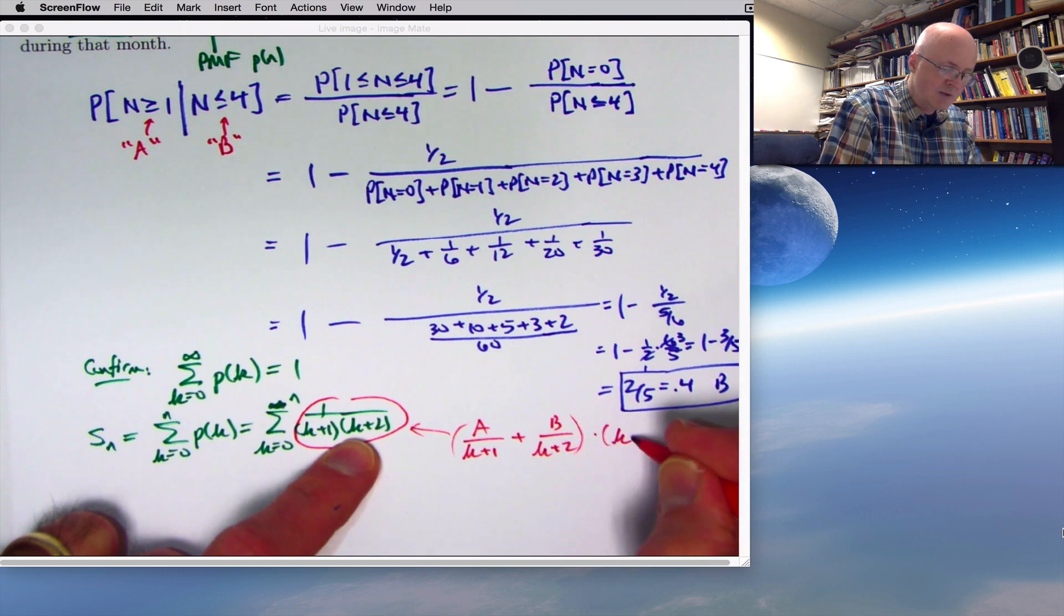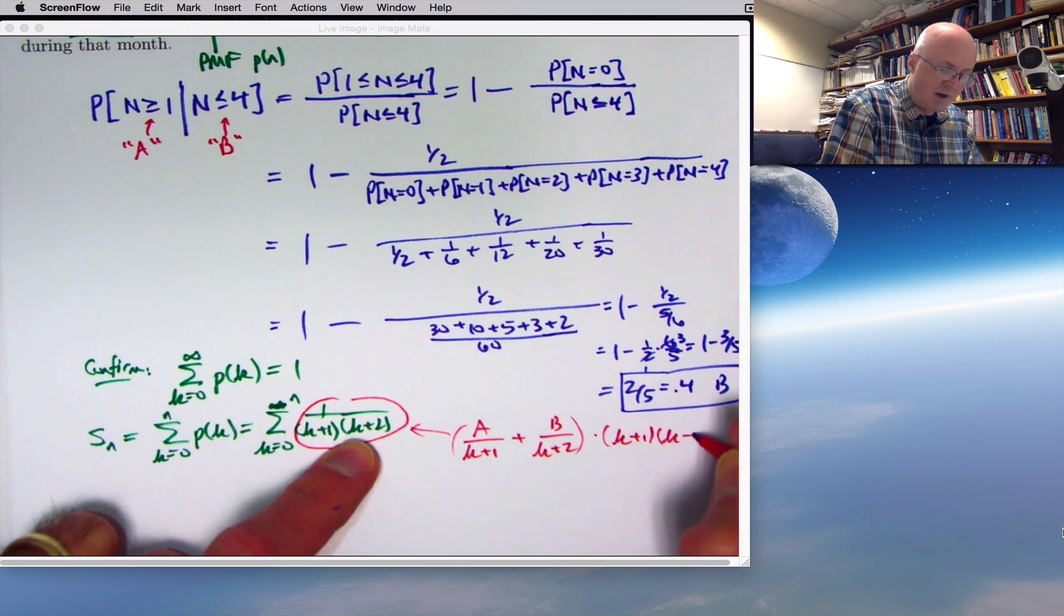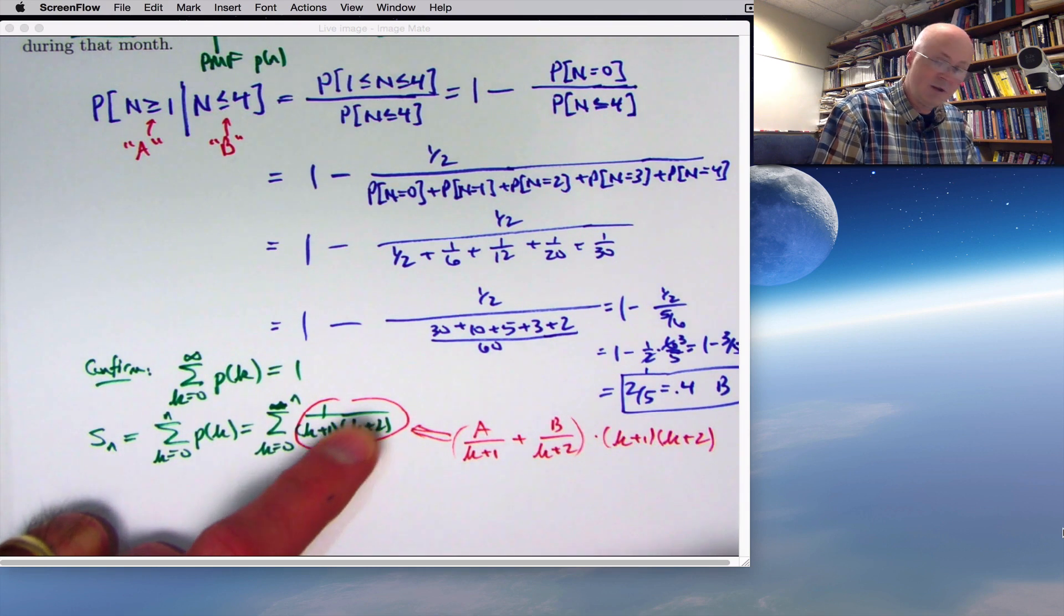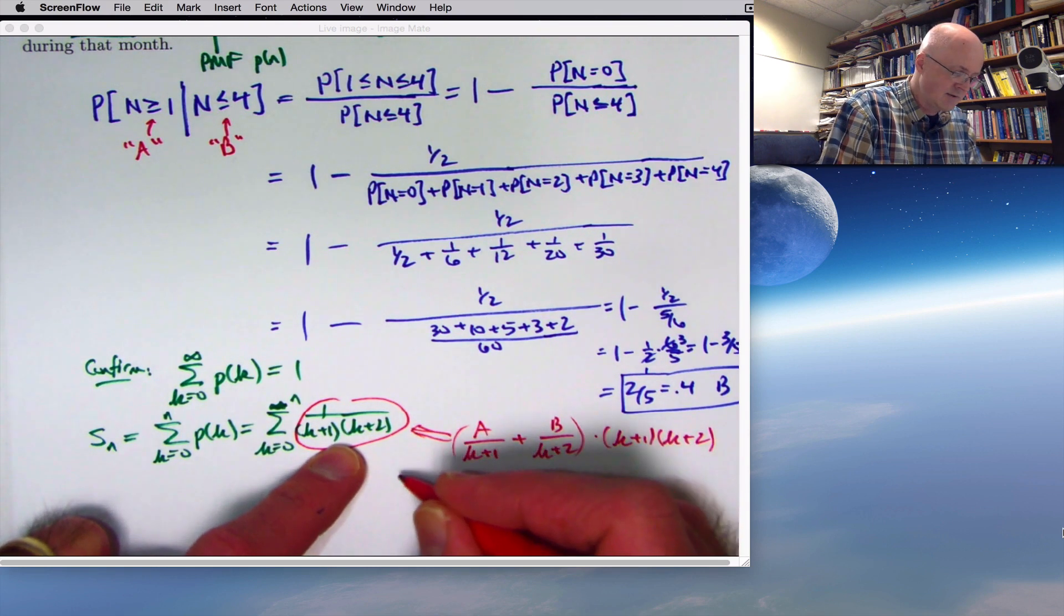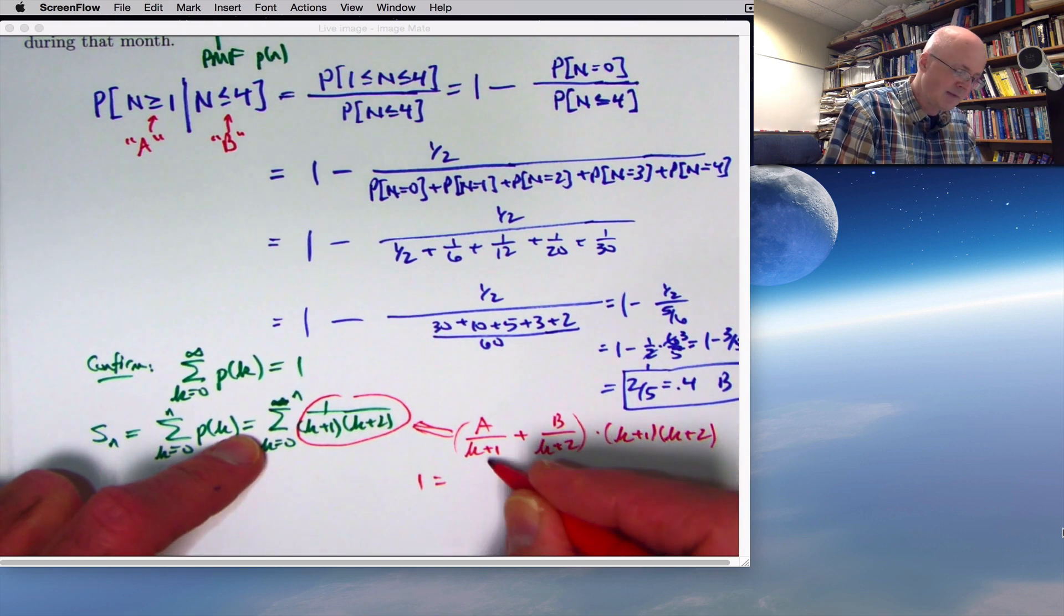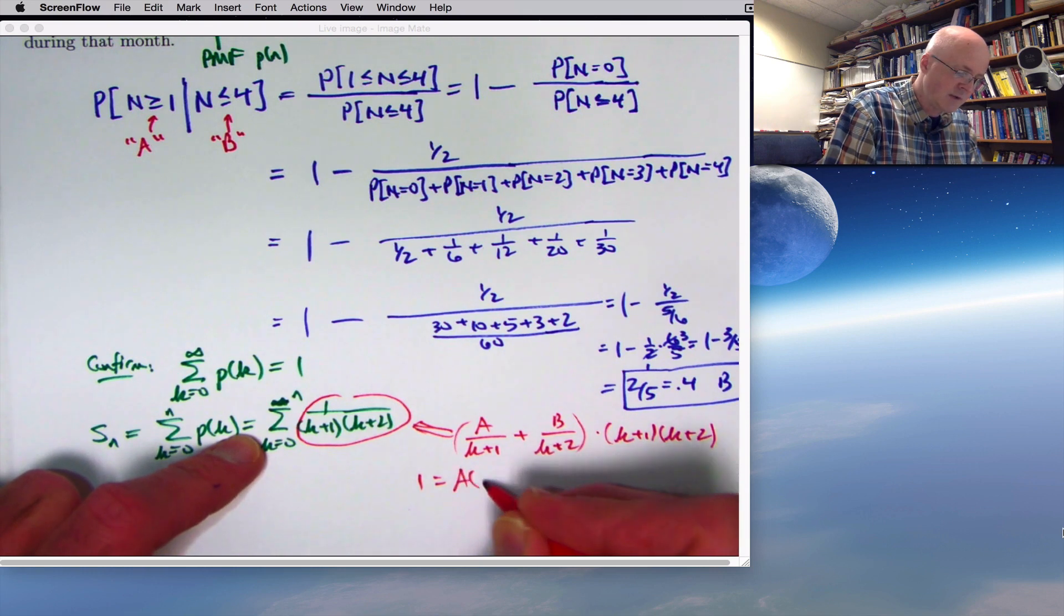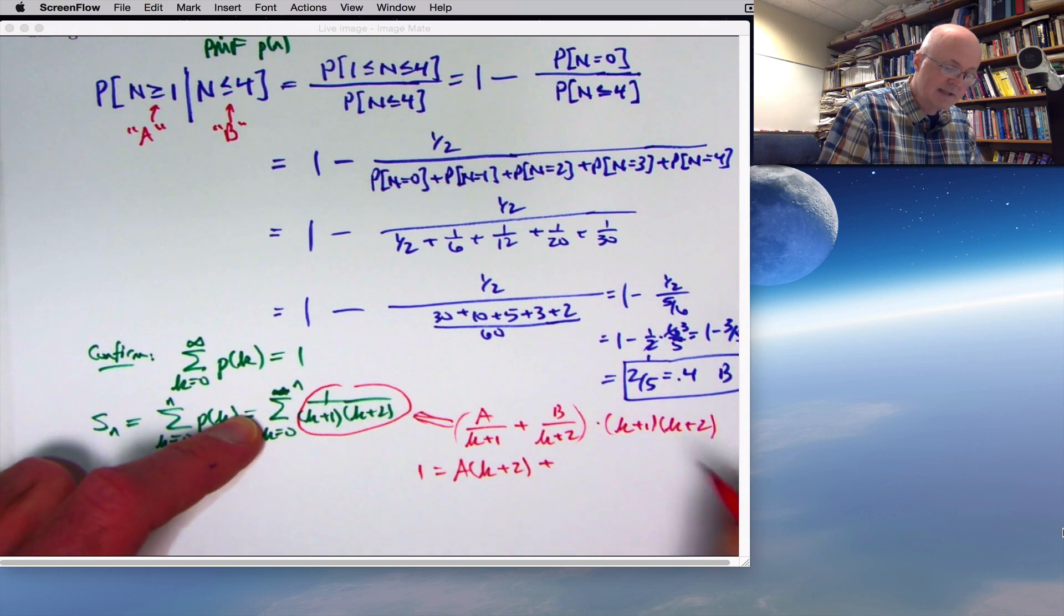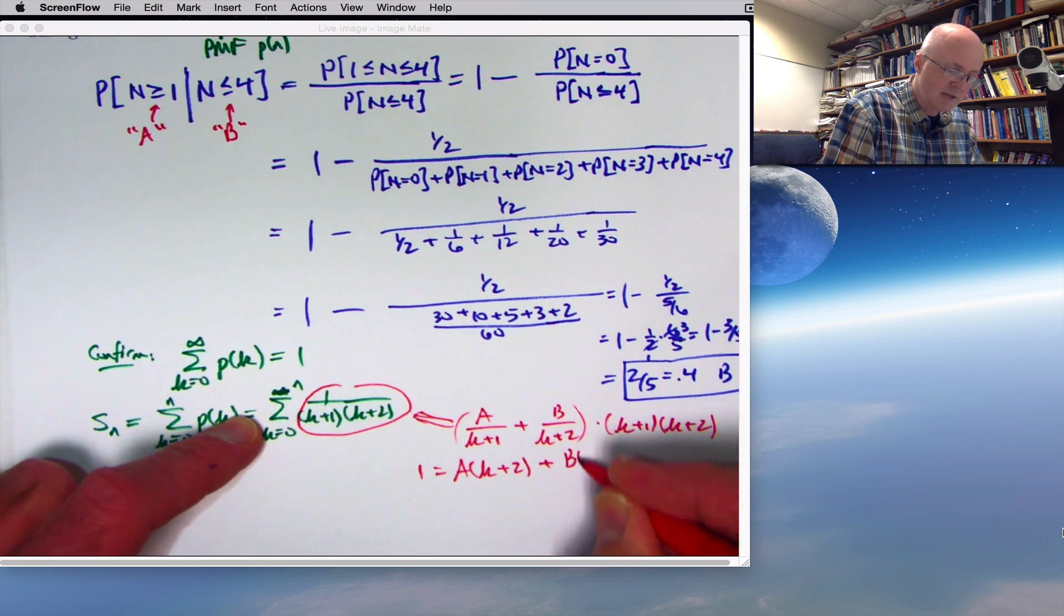What I need to do is set these things equal to each other and multiply both sides by the common denominator. Multiply by k plus 1 times k plus 2 on both sides of this equality here. You get complete cancellation on the left, just leaving you with a 1. On the right, you get partial cancellation. This thing times that, the k plus 1s cancel, leaving you with a times k plus 2. And when you multiply this thing times this, the k plus 2s cancel, leaving you with b times k plus 1.